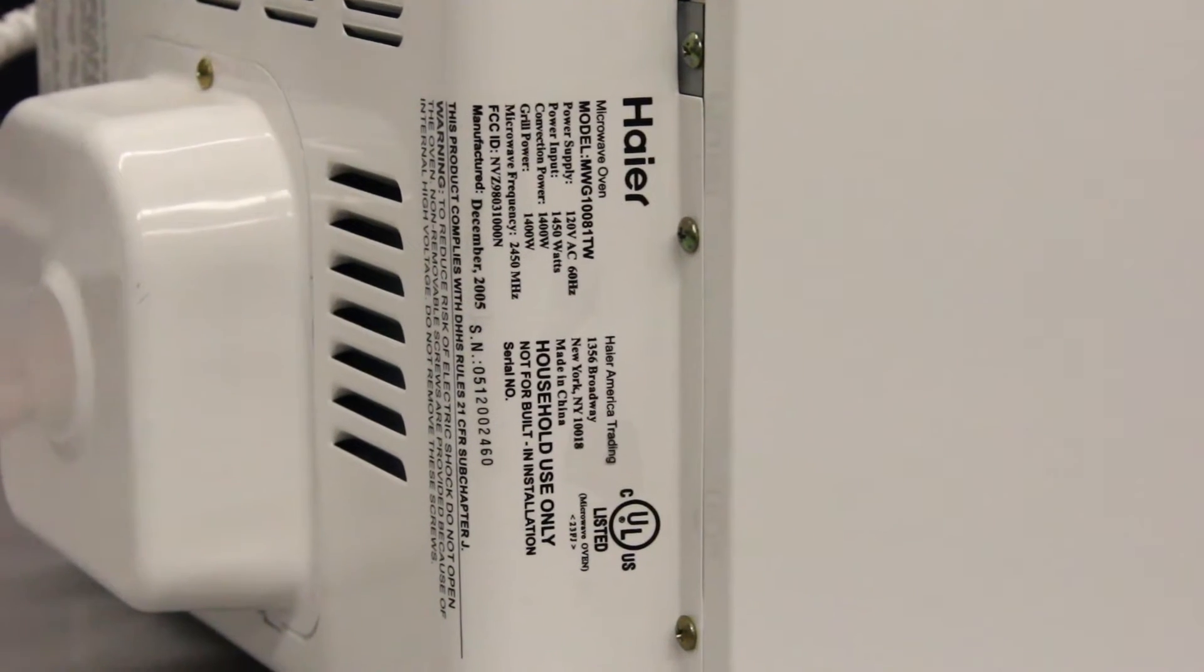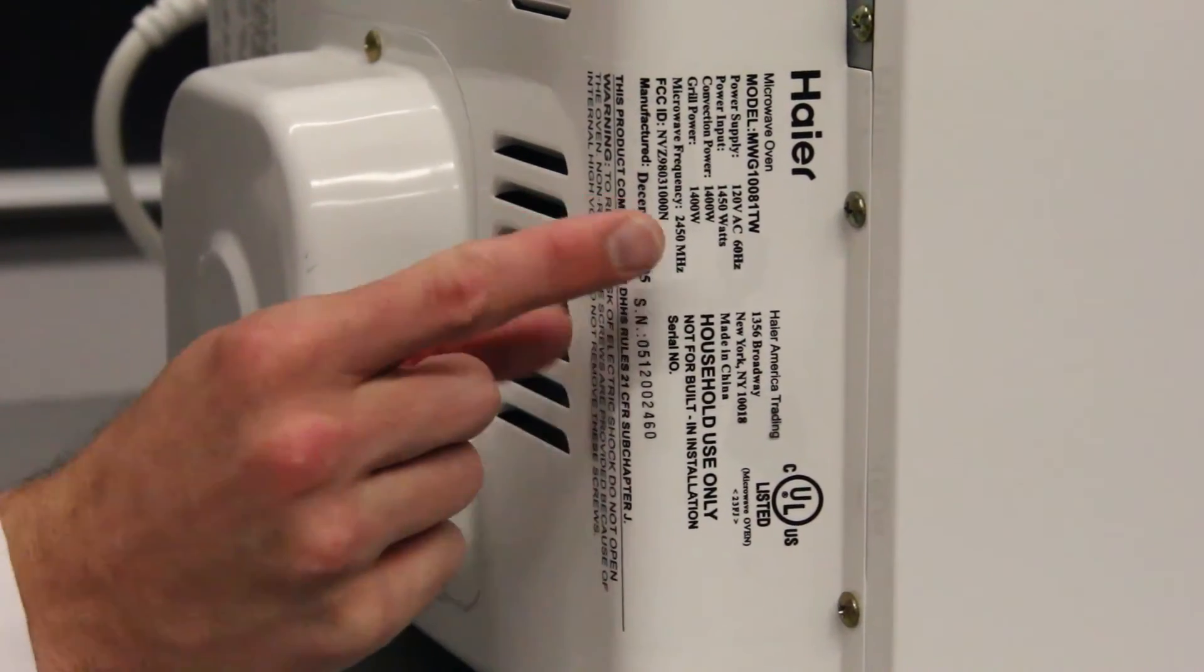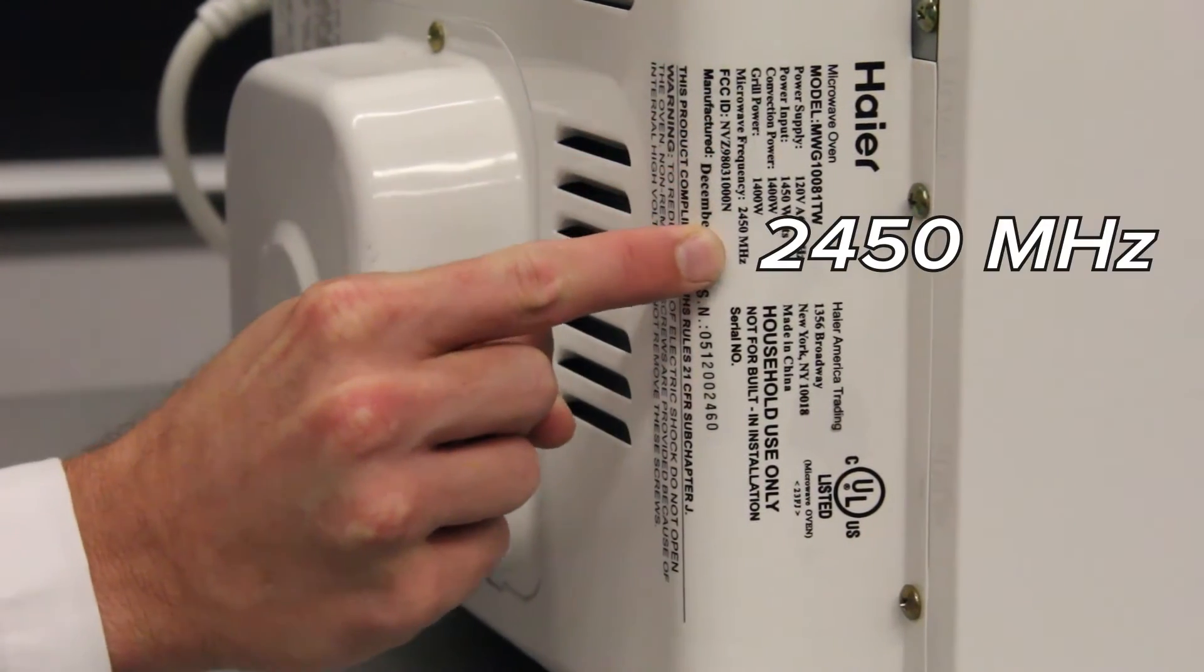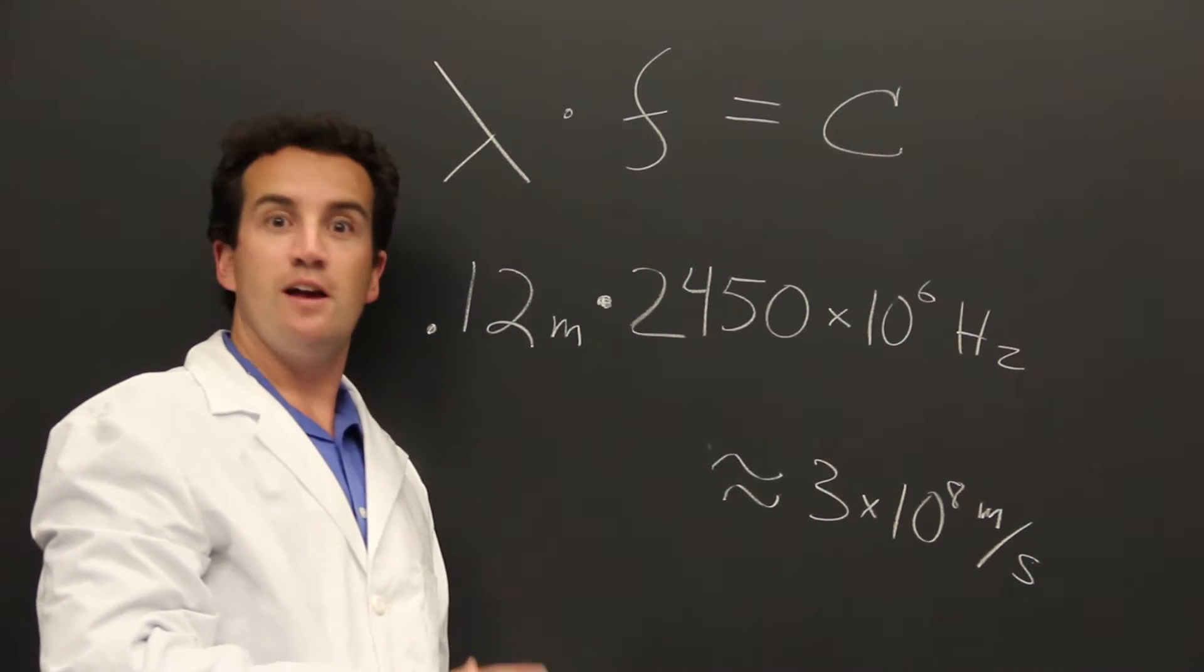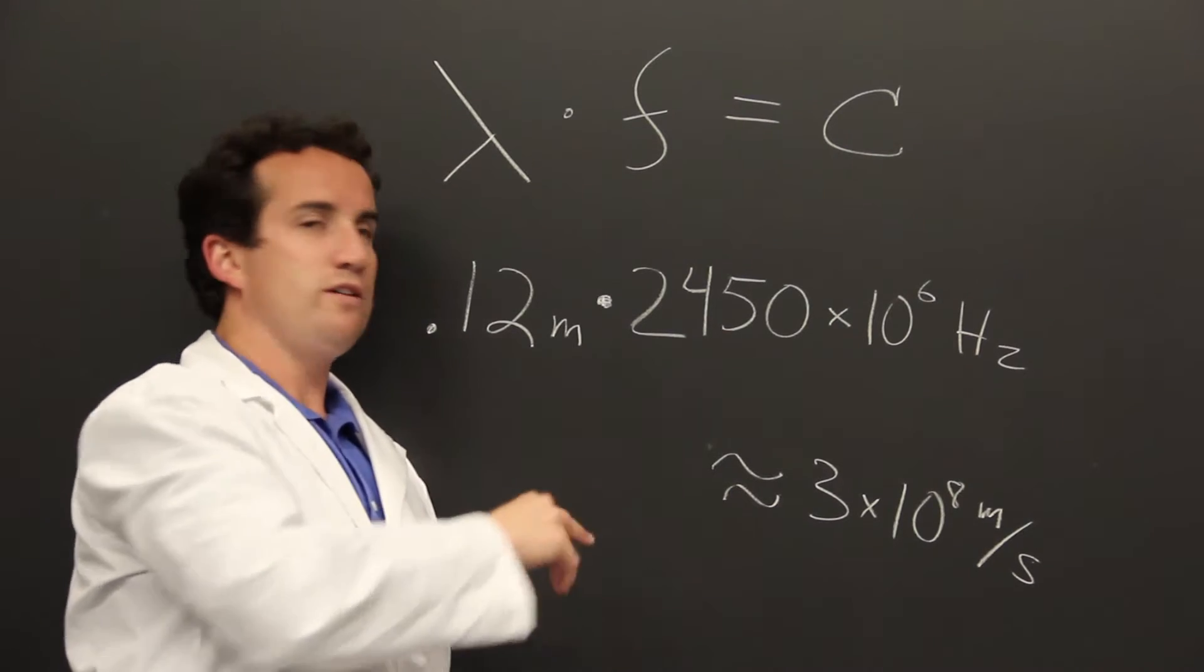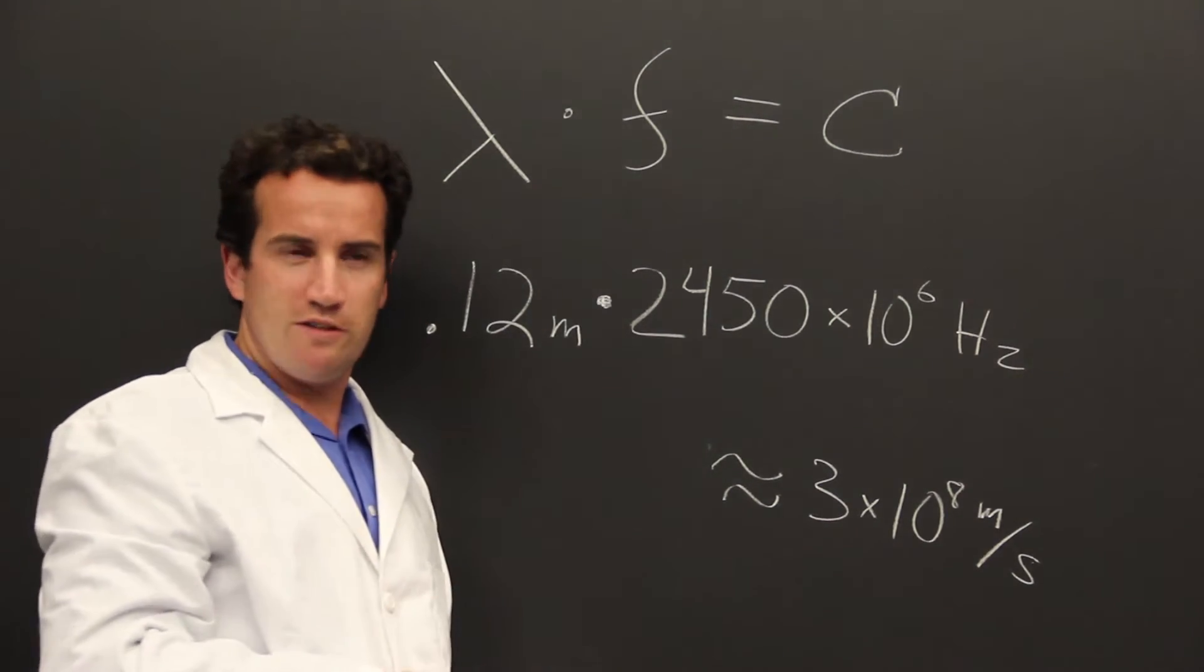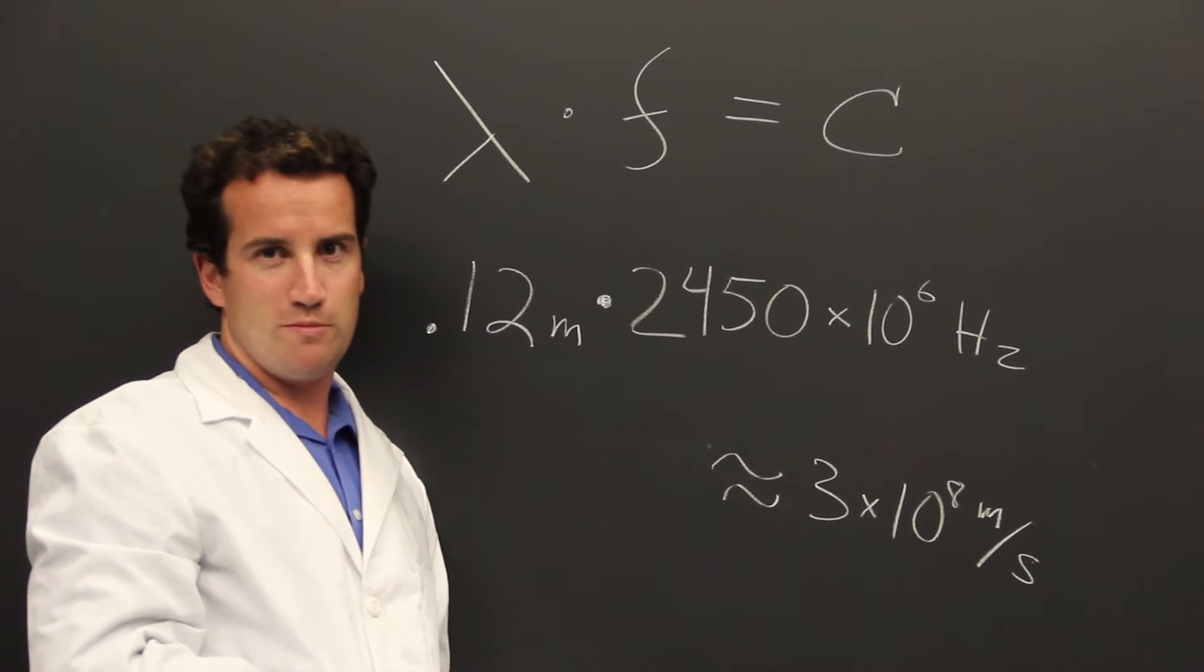Now inside or on the back of the microwave is a label that you've probably never noticed. It says that the frequency is 2450 million Hertz. The product of the wavelength and the frequency should be the speed of light constant C, and it is. 0.12 meters times 2450 million Hertz is the speed of light constant 3 times 10 to the 8 meters per second. We know we did our measurement right.